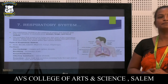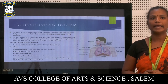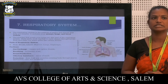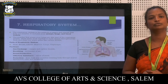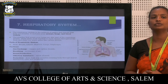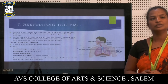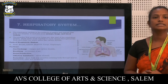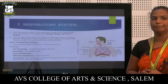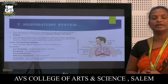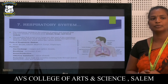The respiratory system is the network of organs and tissue that help you breathe. It includes your airways, lungs, and blood vessels. The muscles that power your lungs are also part of the respiratory system. These parts work together to move oxygen throughout the body and clean out waste gases like carbon dioxide. Parts of the respiratory system: nose, mouth, larynx, pharynx, lungs, and diaphragm. Functions include gas exchange of oxygen and carbon dioxide, breathing and movement of air, sound production, sense of smell, and protection from dust and microbes through mucous production.